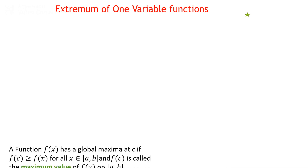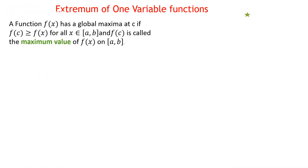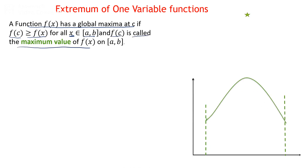For a one-variable function, suppose we have a function f(x) that has a global maxima at point c. If f(c), the value of the function at that point, is greater than or equal to f(x) for all x belonging to [a, b], then f(c) is called the maximum value of f(x) in that interval.